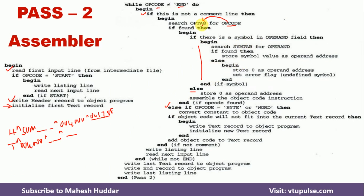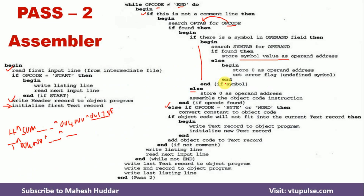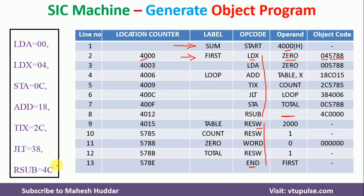If there is a symbol in the operand field but it is not found in SYMTAB, it means it was not processed properly in pass1. In that case, we put 0 as the operand address and set an error flag. If there is no operand in the operand field — for example RSUB — we go to the else part and put 0 as the address. The value of RSUB is 4C, and since there is no operand we write 0 as the address.